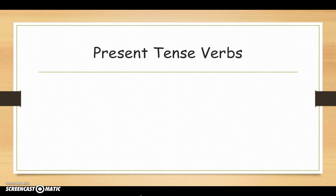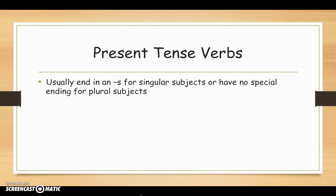Present tense verbs usually end in an S for singular subjects, subjects that are just singular, meaning there's only one of them, or they don't have any special ending if there's more than one. They happen now in the present. That's how you can remember present tense verbs.